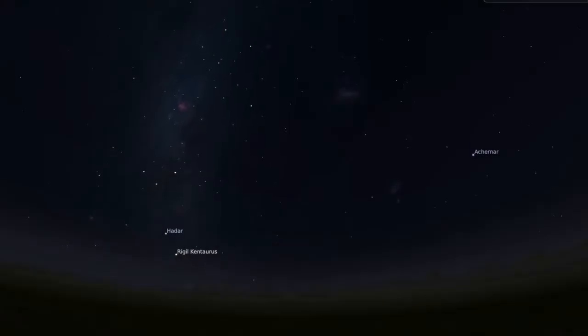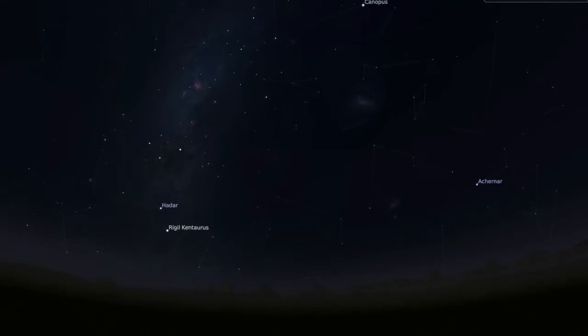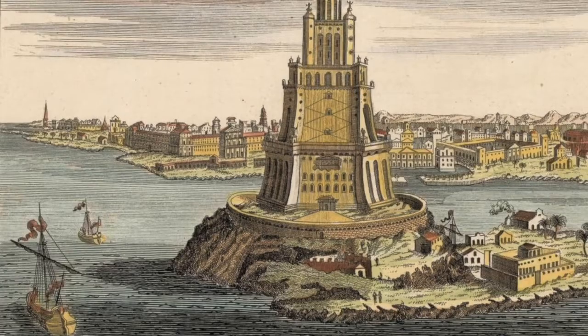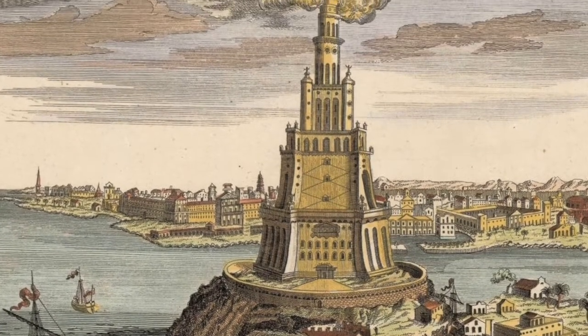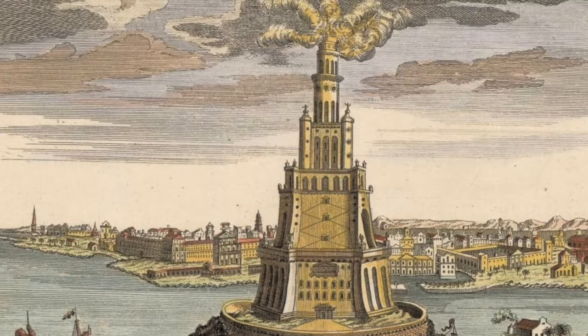Le quattro stelle della Croce del Sud erano note sin dall'antichità, anche se non come una costellazione a sé stante. Erano infatti facilmente visibili dall'Africa del Nord e, in particolare, dall'Alessandria d'Egitto, che fu per secoli il principale centro scientifico e culturale del mondo antico.